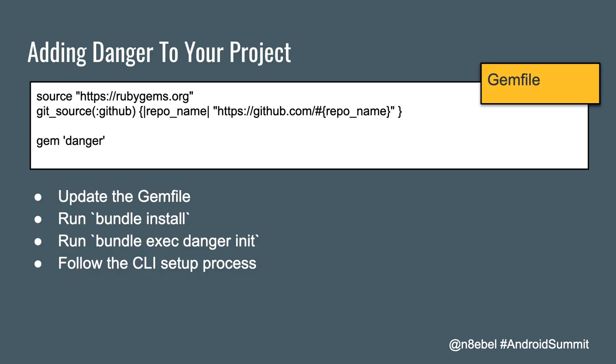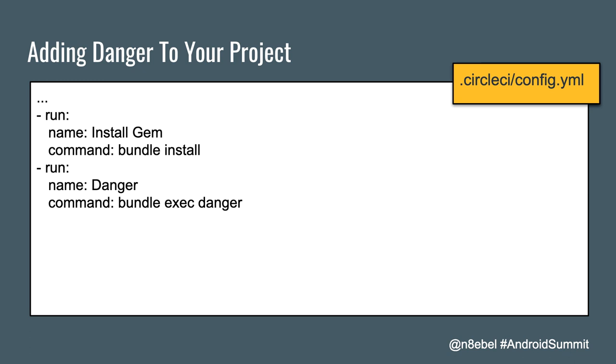To set up Danger, the easiest approach is to use the Ruby install version. This involves adding a Gemfile to your project, running `bundle install` from the command line, then running `bundle exec danger init` and following the CLI setup process. The Gemfile simply needs to have the `danger` gem added to it. To add Danger to your build, add two tasks to your CircleCI config: one to run `bundle install` and another to run `bundle exec danger`. You also need Ruby installed on your build machine to make sure it can recognize these commands.